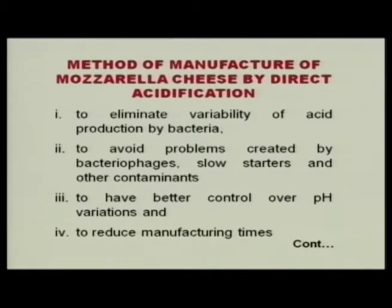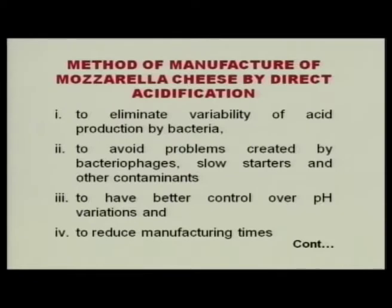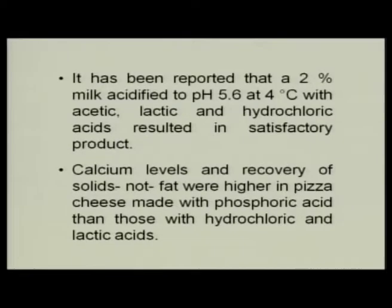We now come to the method of manufacture of Mozzarella cheese by direct acidification, because nowadays methods have been developed using direct acidification. The advantages are: when you use microorganisms they can lead to uncontrolled acid production. To eliminate that variability, to avoid problems created by bacteriophages, slow starters and other contaminants, to have better control over pH variations, and to reduce the manufacturing time, the direct acidification method is used. It has been reported that milk acidified to pH 5.6 at 4 degree centigrade with acetic acid, lactic acid, or hydrochloric acid results in a satisfactory product.